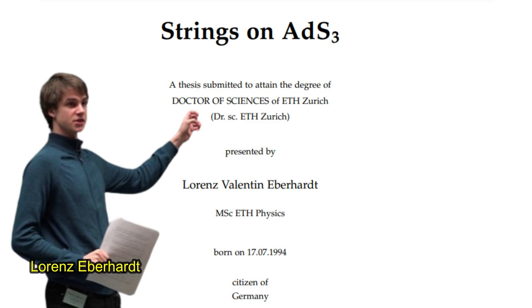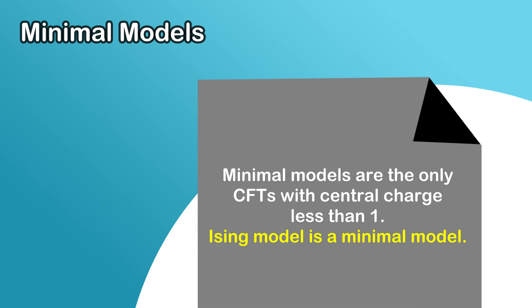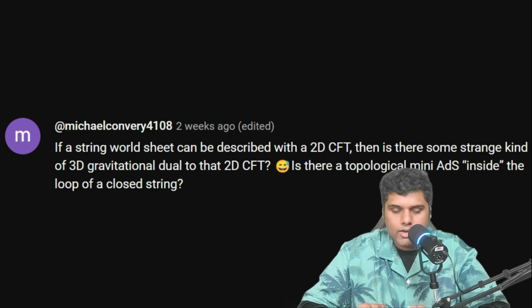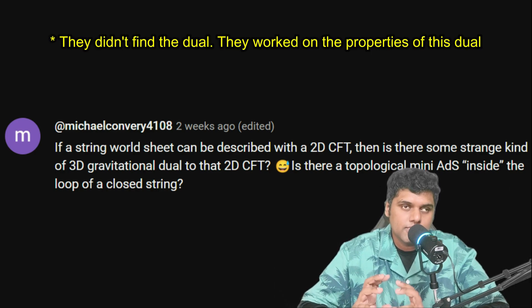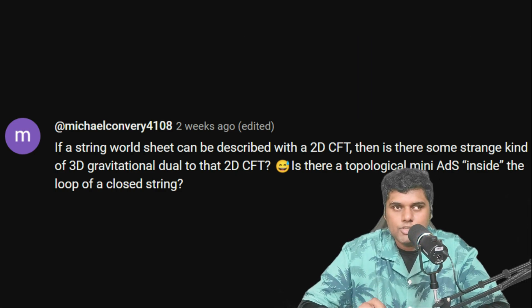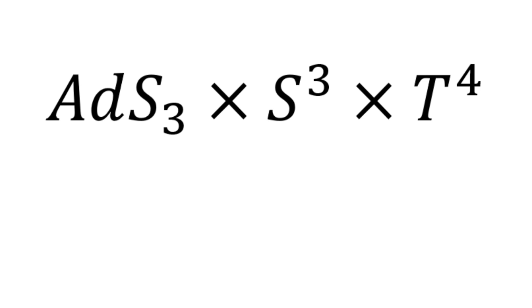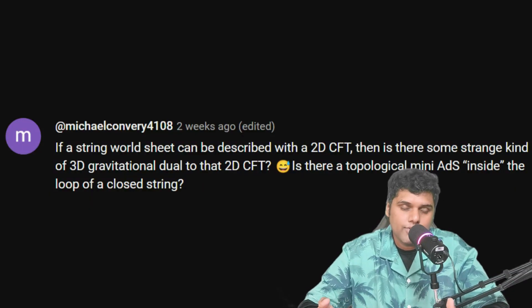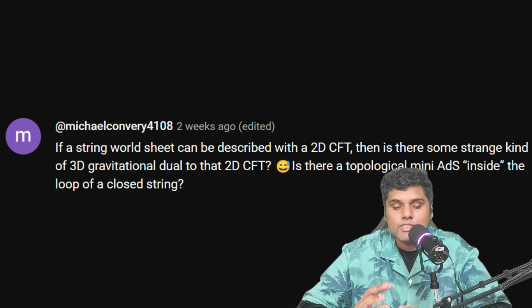There are also other CFTs such as the Ising model and different minimal models for which gravitational duals have been proposed by Matthias Gaberdiel, Rajesh Gopakumar, and their collaborators. Gaberdiel and Eberhard's work includes finding the gravitational dual of the symmetric orbifold CFT. The gravitational dual turns out to be ADS-3 × S³ × T⁴ — ADS-3 is three-dimensional anti-de Sitter space, S³ is a three-sphere, and T⁴ is a four-torus. Adding those dimensions gives 10, which is correct since string theory lives in 10 dimensions. This is one area where we understand a great deal.